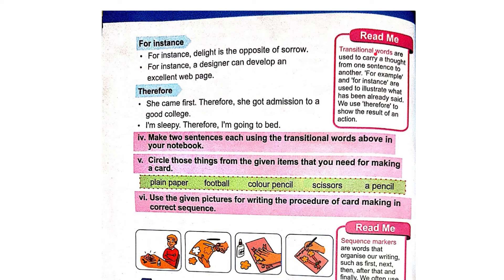Transitional words are used to carry a thought from one sentence to another. 'For example' and 'for instance' are used to illustrate what has already been said. Use 'therefore' to show the result of an action. For instance: 'Delight is the opposite of sorrow.' 'A designer can develop an excellent webpage.' 'Therefore, she came first.' 'Therefore, she got an admission to a good college.' 'I am sleepy, therefore I am going to bed.'